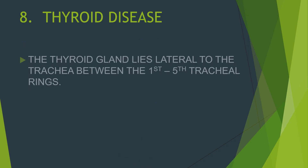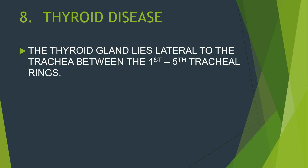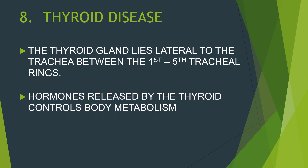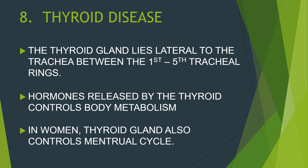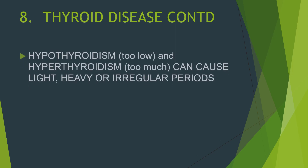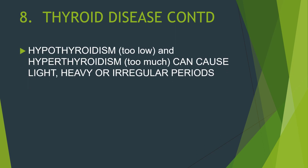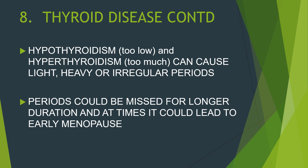Thyroid disease is another cause of irregular menstruation. The thyroid gland lies lateral to the trachea between the first and fifth tracheal rings. Hormones released by the thyroid control body metabolism, and in women, the thyroid gland also controls the menstrual cycle. Hypothyroidism and hyperthyroidism can cause light, heavy, or irregular periods. Periods could be missed for longer durations, and at times thyroid disease could lead to early menopause.